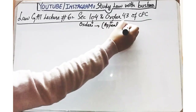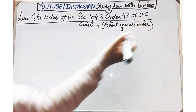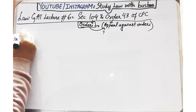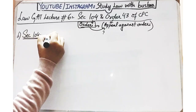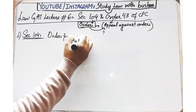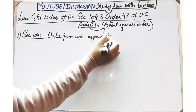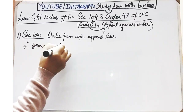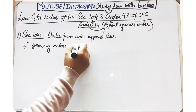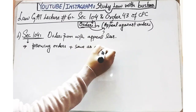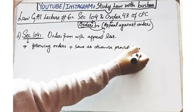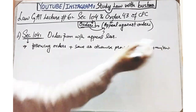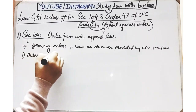Order 43 aur Section 104 dono deal karte hain 'appeal from orders' - yani ke woh kaun kaun se orders hain jinke against appeal file ki ja sakti hai. Last video mein humne discuss kiya tha ke kaun se decrees hain jinke against appeal file ho sakti hai - woh Section 96 aur Order 41 tha. Aaj hum padhenge ki kin orders ke against appeal ho sakti hai.